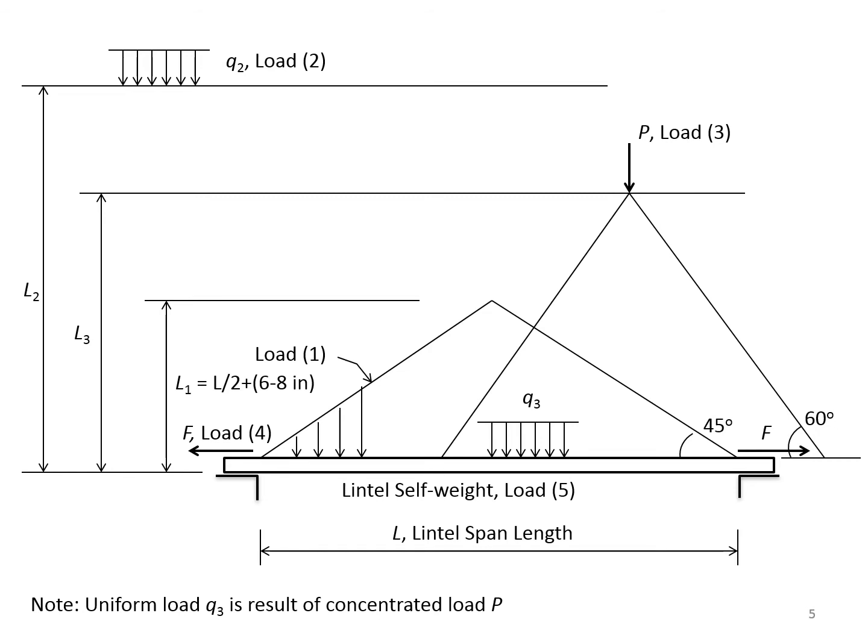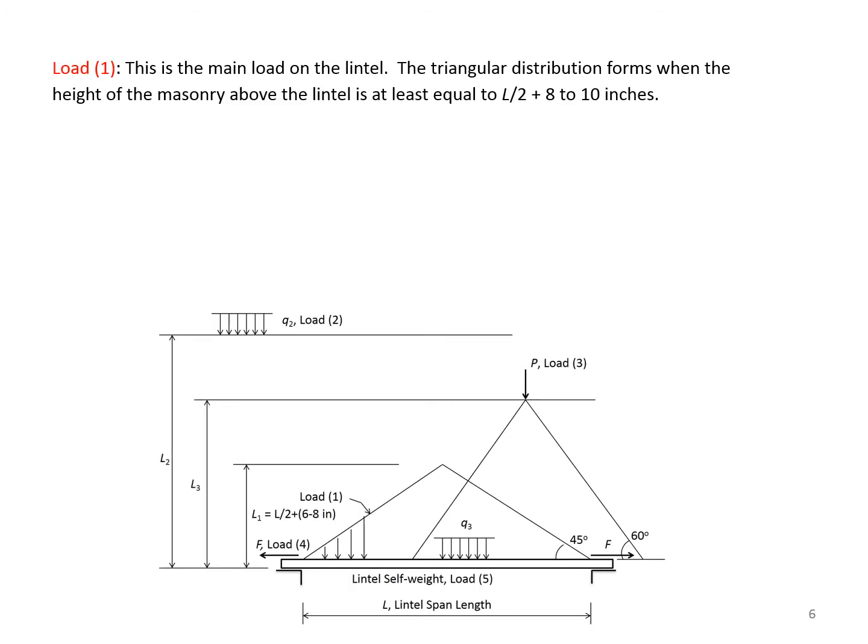This slide shows five different loads on the lintel. Load one is a triangular load we talked about. Load two is a uniform load from the floor or roof above. Load three is any concentrated load applied at the height of L3. Load four is a horizontal thrust force F because of the arching action of the masonry and load five is the self-weight of the lintel. Please note that L is the span length of the lintel.